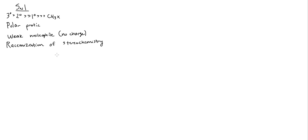So with stereochemistry in SN1, if I start with R, I end with both R and S in my products — I get two products, R and S. If I start with S, I also end with R and S. Another way to think about it: if I start with my reacting material on a wedge, then my product is going to be on both a wedge and a dash. Let's look at a couple of examples to make this a bit more clear.